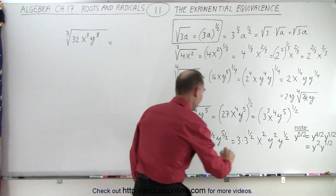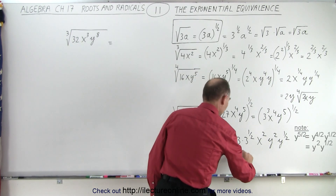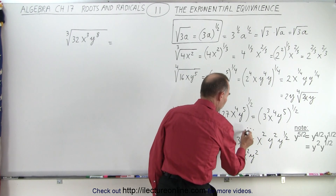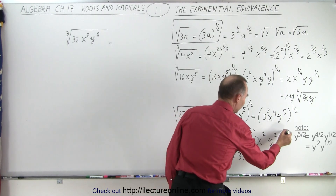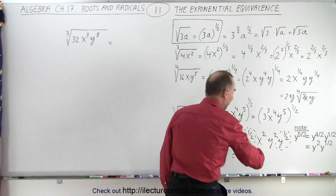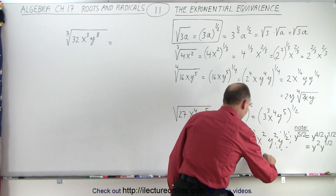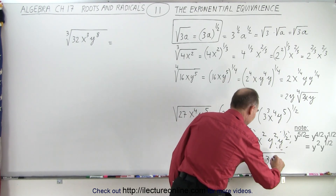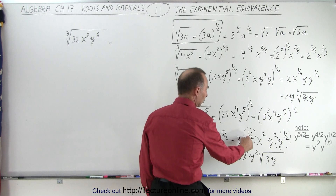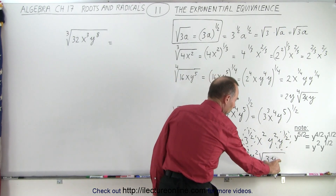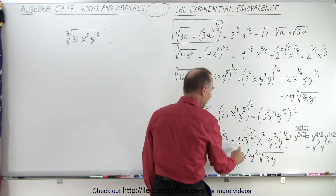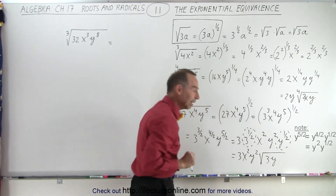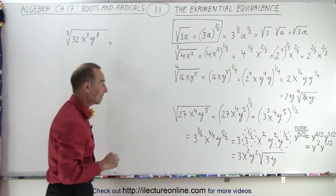We can rewrite this as 3x²y², and then the portions that still have a fractional exponent can be placed back inside the radical — the square root of 3 times y. So 3 to the one-half power and y to the one-half power can be written as the square root of 3 times y. Then we pull out the 3, x squared, and y squared, and write it in front. And that is the exact same thing.